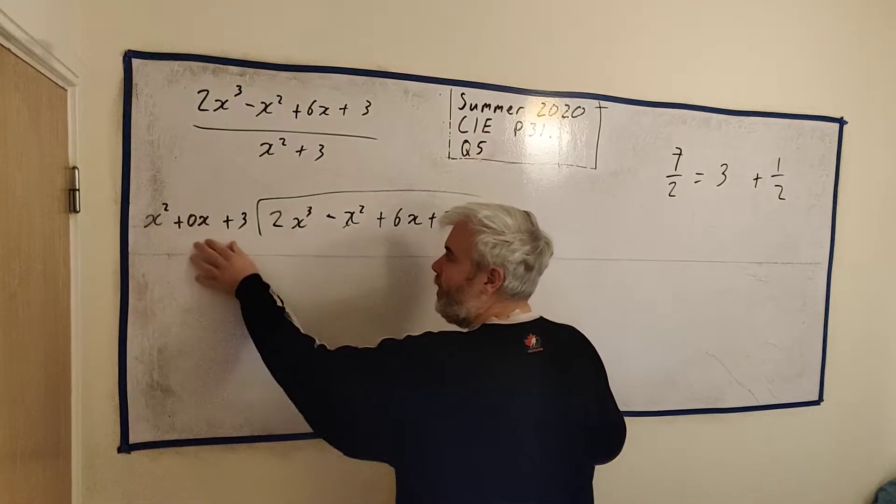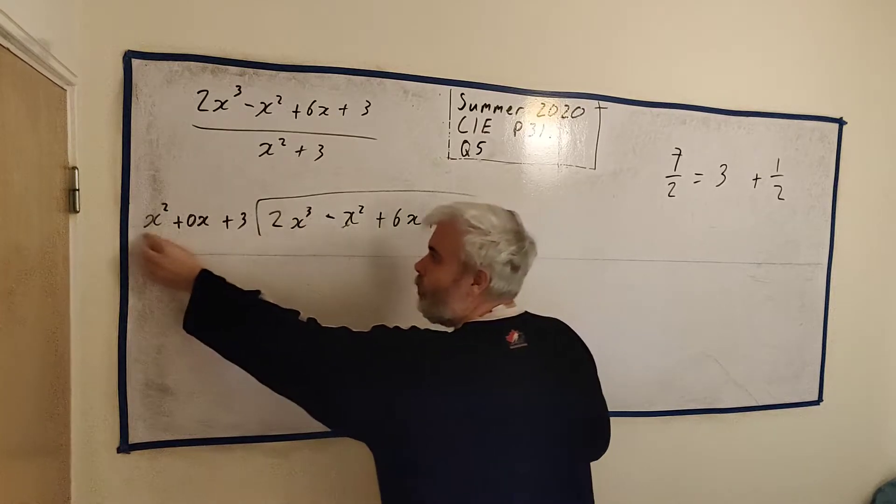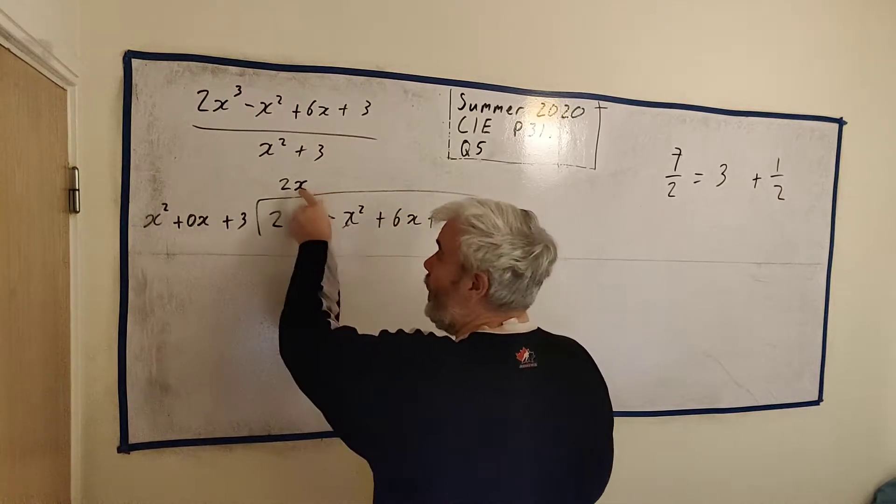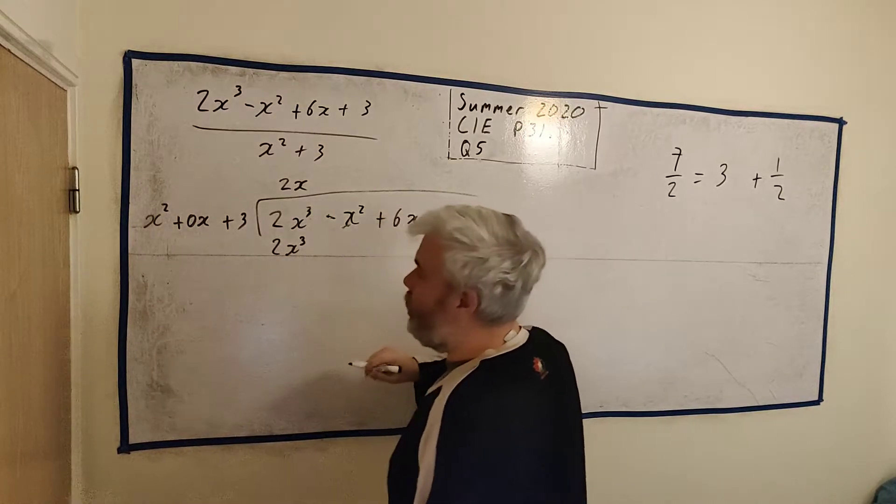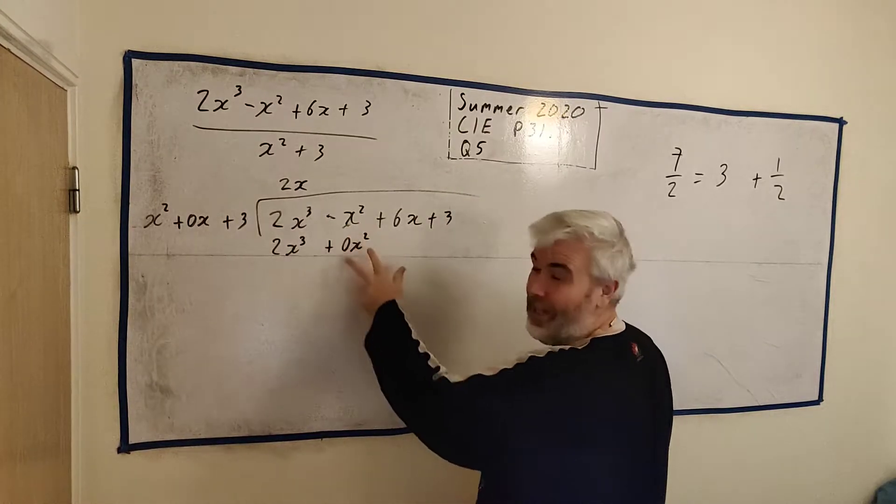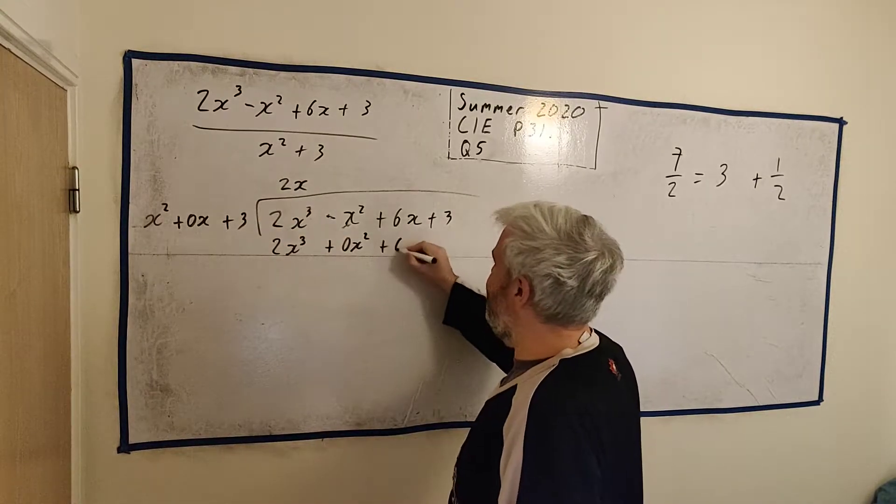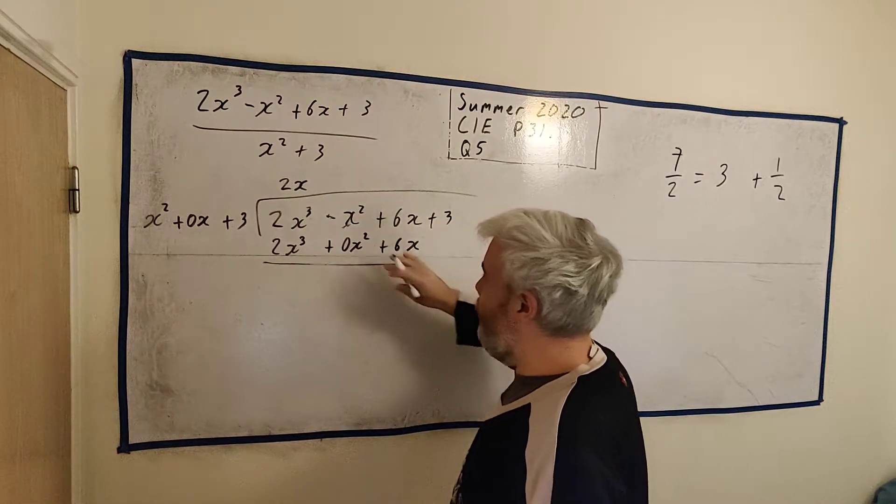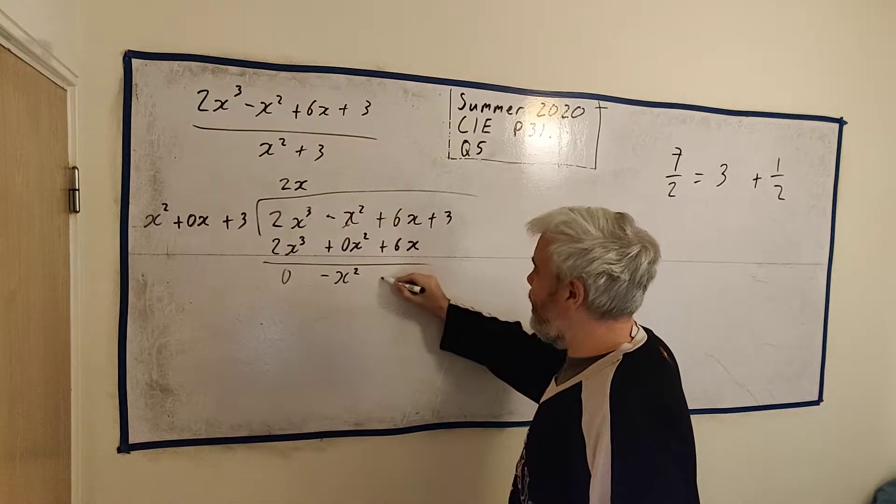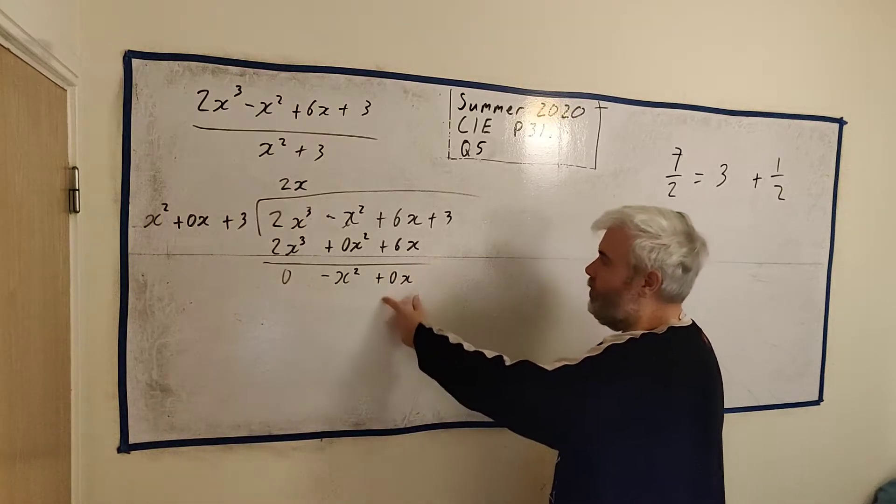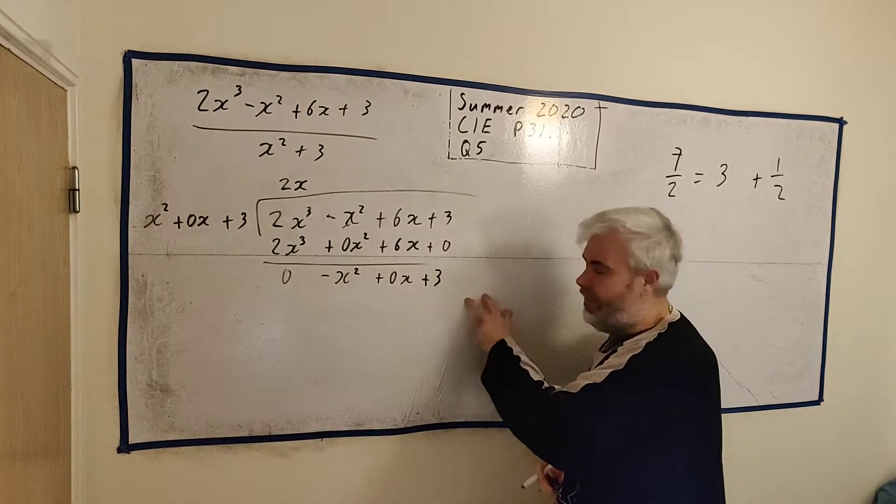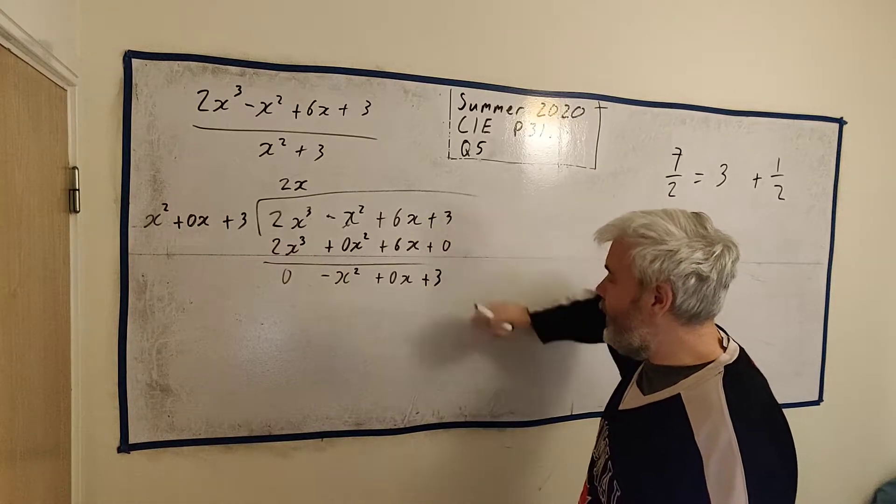So now we just carry on like normal. What would we have to multiply this by to get this? What would we have to multiply x squared by to get 2x squared? We'd have to multiply by 2x. So let's do it. 2x multiplied by all of this will get 2x cubed plus this one will get 0x squared. 2x times the three will give 6x. And we take this away and we see what remainder that part has. That's 0. Minus x squared take away nothing is still minus x squared.